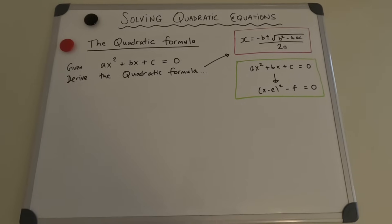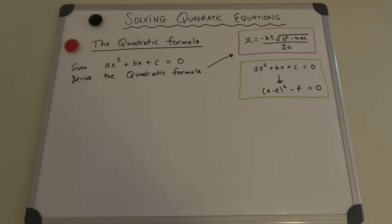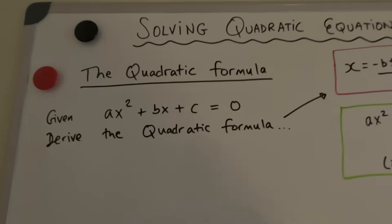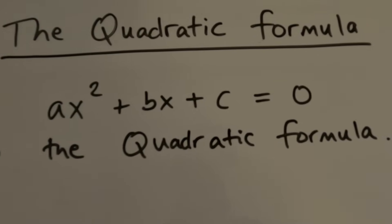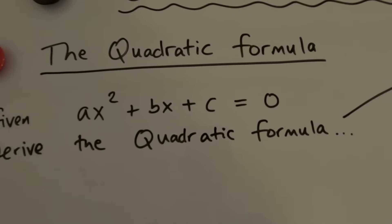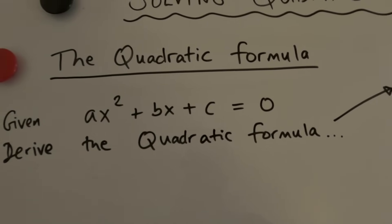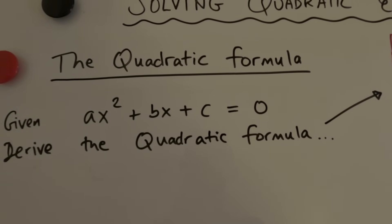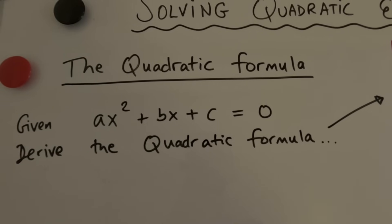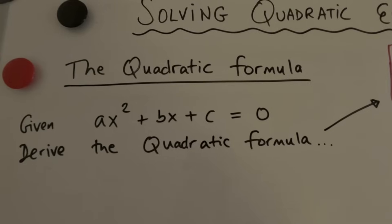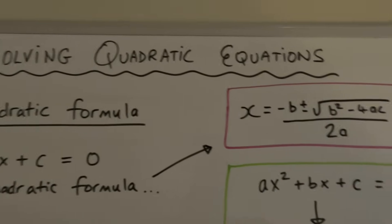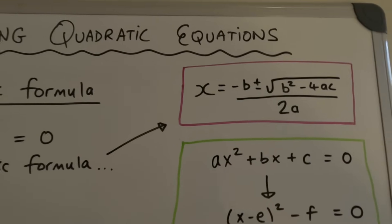Hello and welcome to the video. Today we're going to be looking at the quadratic formula and how it came about — how you derive it. A quadratic equation is of the form ax² + bx + c = 0 and we want to solve for x. There are different ways of doing it; in a previous video we looked at completing the square, and another way is to just use the quadratic formula directly — it may be given to you in an examination or you can just learn it by heart.